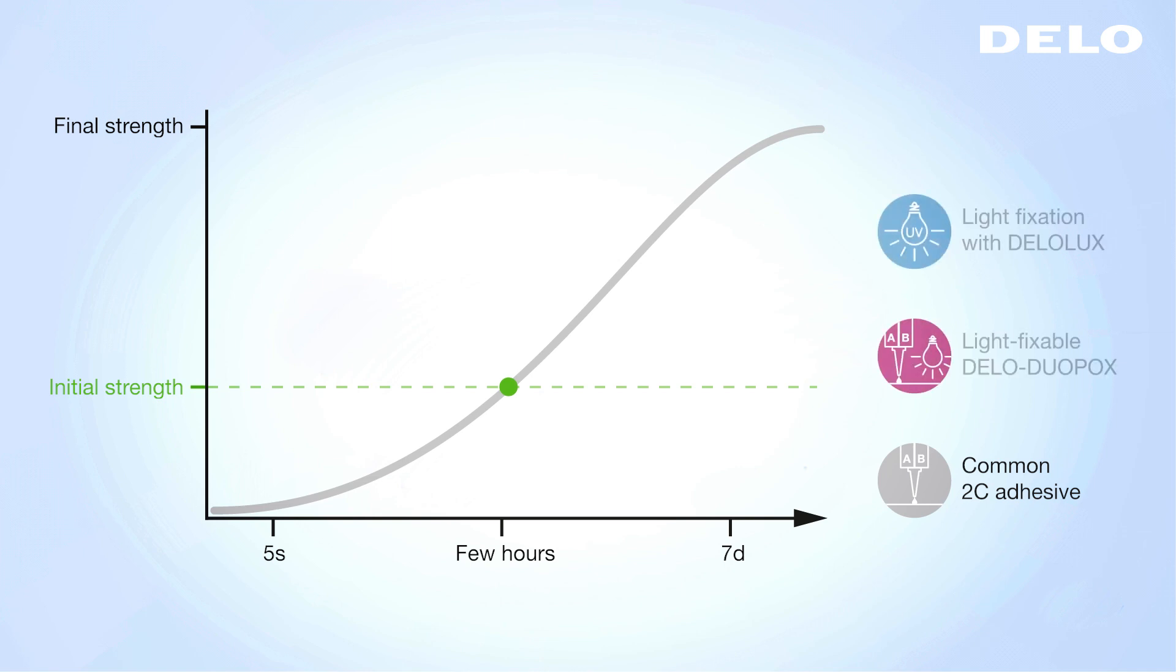With the new hybrid chemistry initial strength can be achieved within seconds. Areas which are shielded from light cure within the next few hours until reaching final strength. But due to the initial strength build up parts can be handled directly and the cycle time can be decreased.